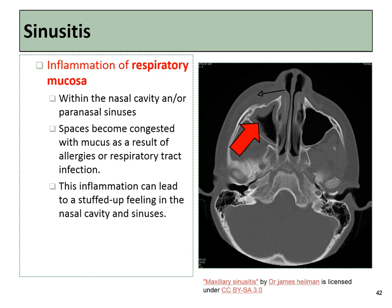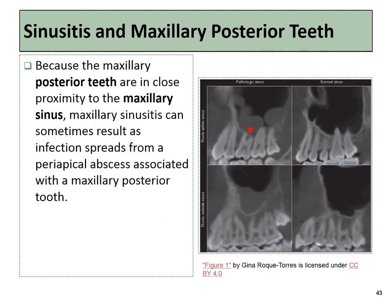Nevertheless, in this image to the right, we can see one of the maxillary sinuses is inflamed. One of the reasons that we are concerned about this is that the posterior maxillary teeth can be really close to or even partially inside of the maxillary sinuses, which means that any sinus infection would have a route where it could spread to become an infection of those teeth.